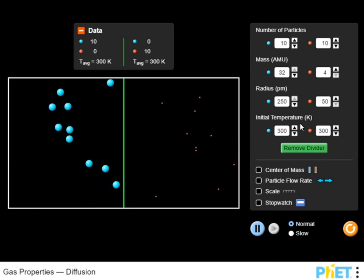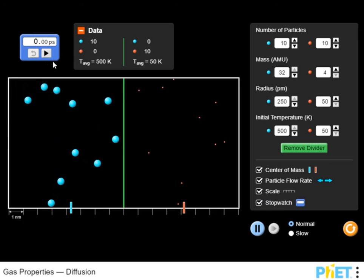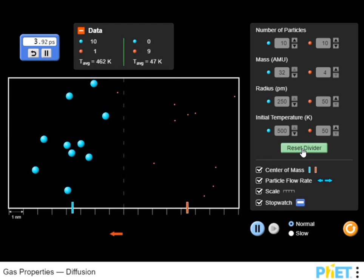In the simulation, you will mix two gases to explore diffusion. Experiment with concentration, temperature, mass and radius and determine how these factors affect the rate of diffusion.